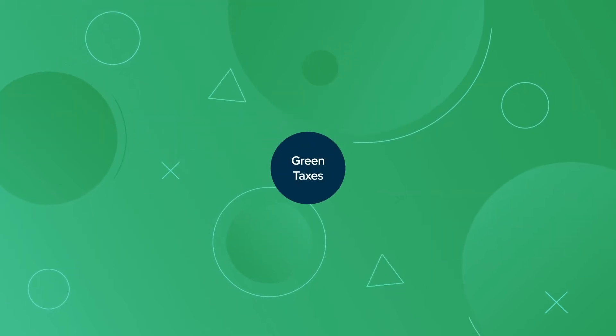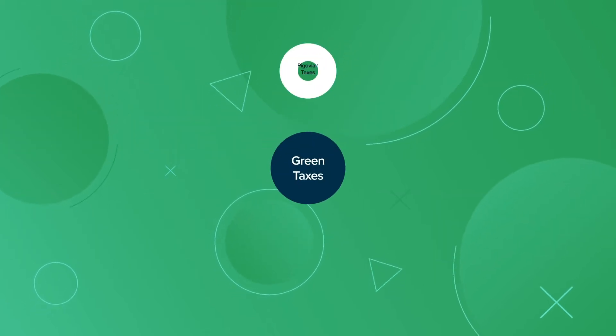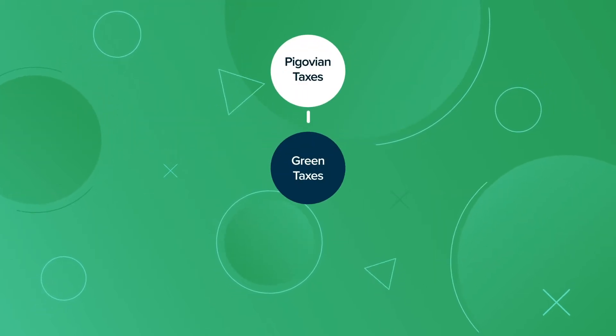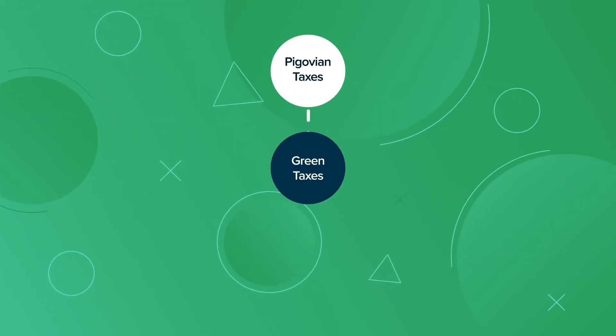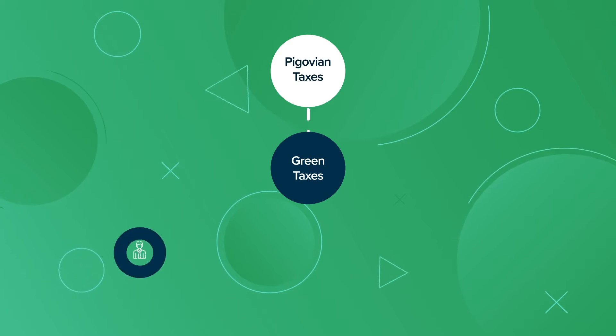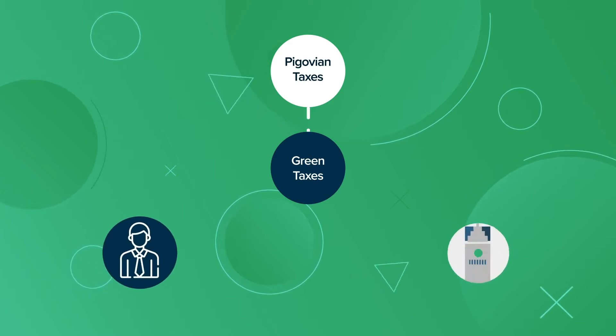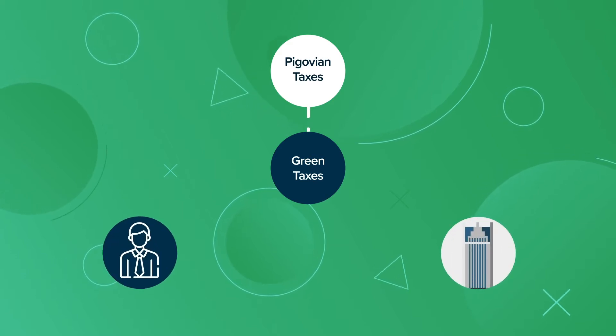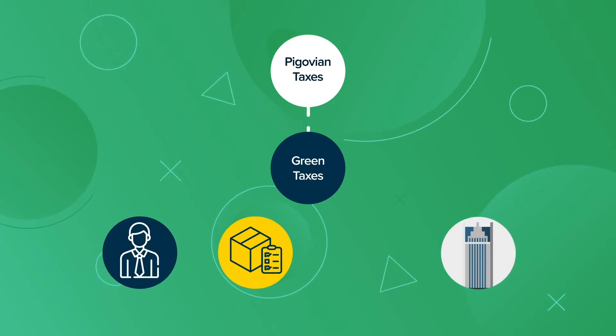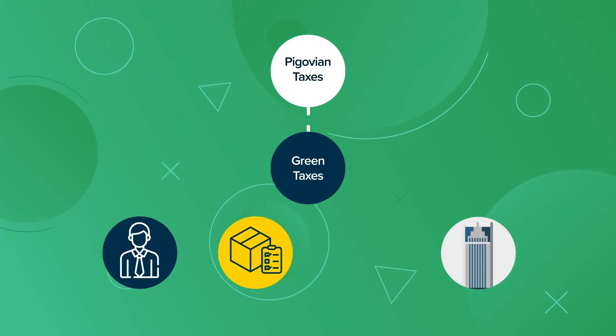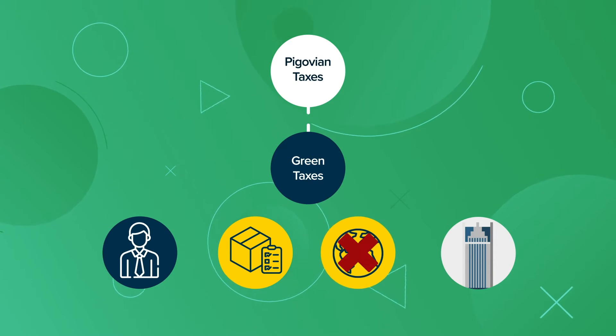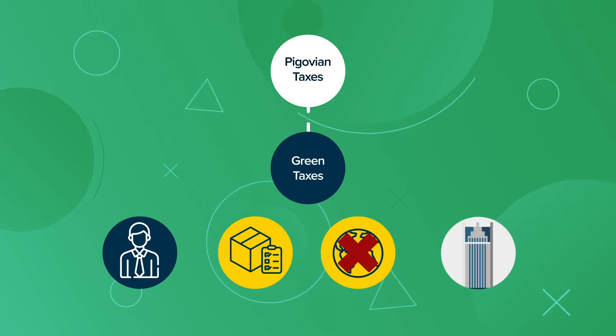Green taxes are examples of Pigovian taxes, or taxes that penalize individuals and private enterprises for making products or using production methods that have an adverse effect on society.